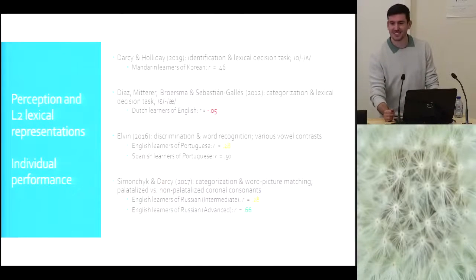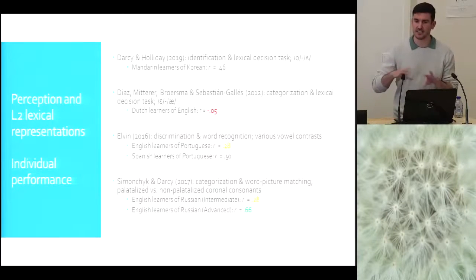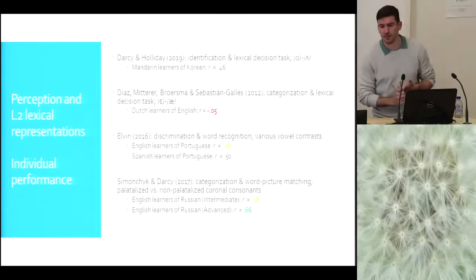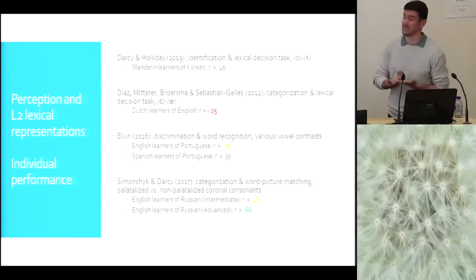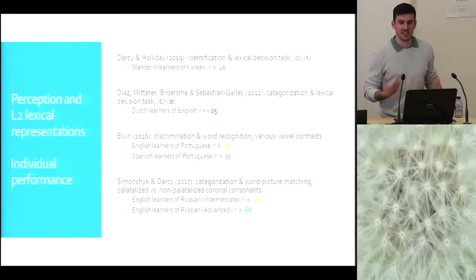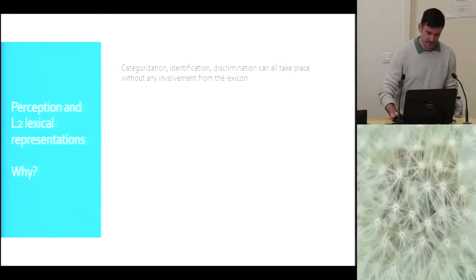What about individual performances? Here you have several studies, all looking into tasks tapping at two levels. There are different tasks, different contrasts, different populations. And one striking finding is that when you look at the correlations that are reported, they are all over the place in the sense that they go from minus 0.05, so close to zero, intermediate values like 0.28, and the stronger of all here, 0.66, which is pretty solid, but still suggests that there is room for something else.